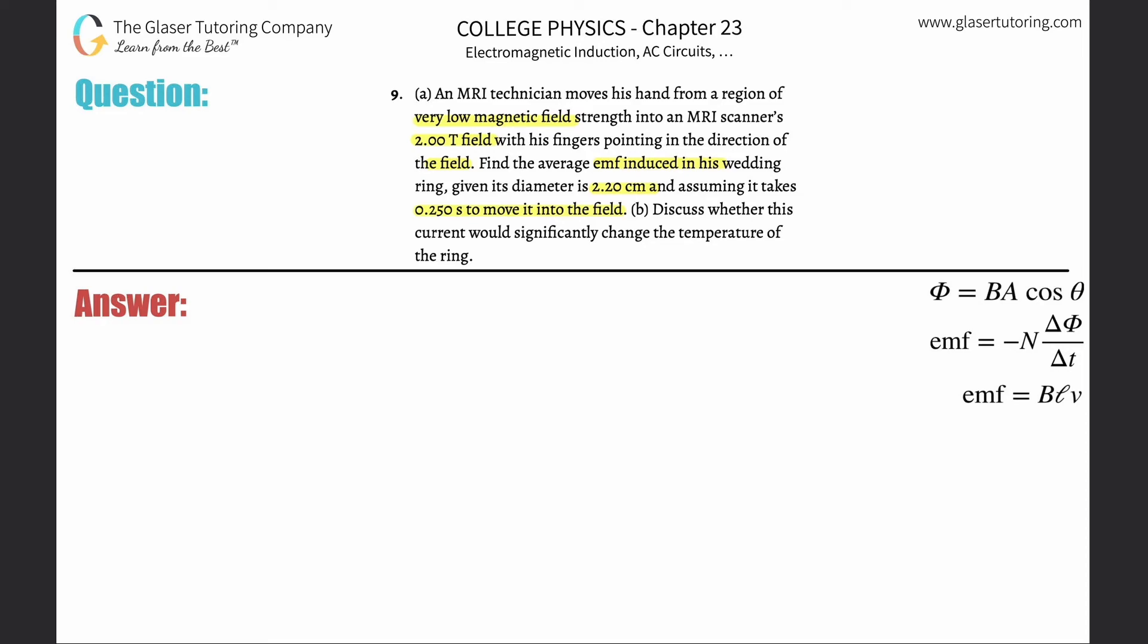All right, so basically here is the wedding ring, and let's assume we're viewing it from the side. He's moving his hand or she's moving her finger into this magnetic field, and it is pointing through the ring basically. It started at zero, meaning the initial magnetic field was zero since it was in a region of very low.